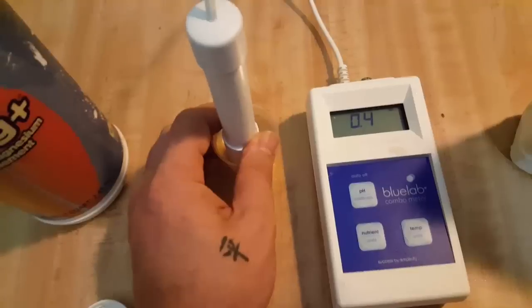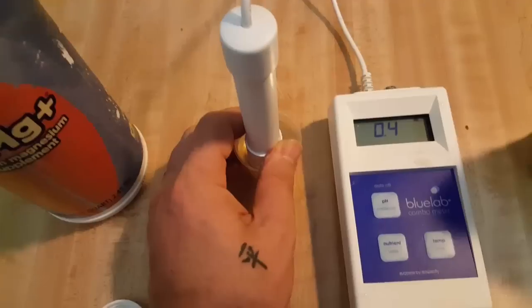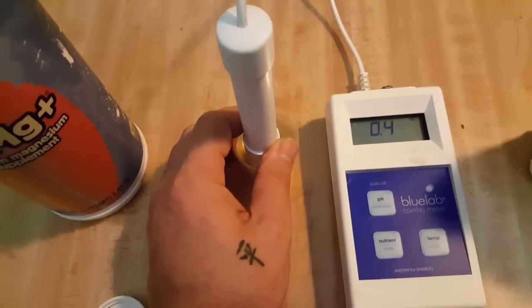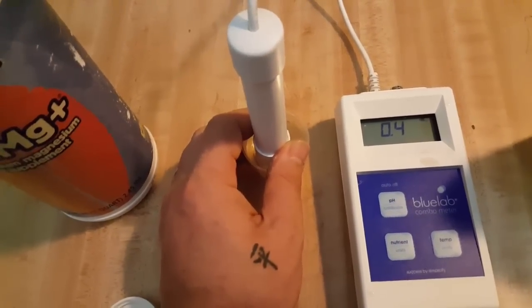That's the difference between EC and the two different types of TDS measurements. So I recommend, again, to buy one that has EC. In fact, just get one that has only EC. Don't even worry about ppm.